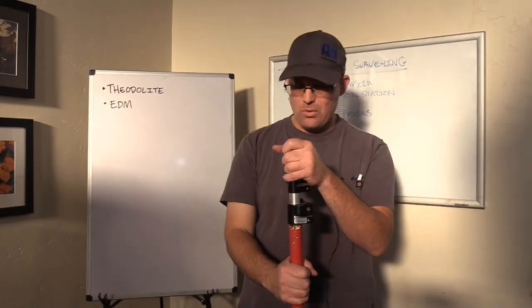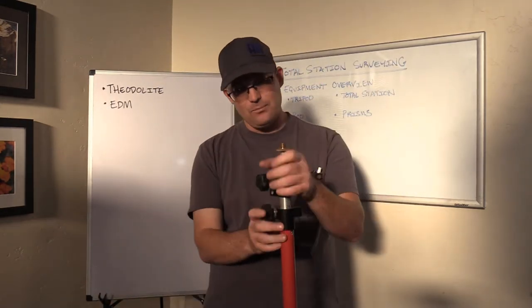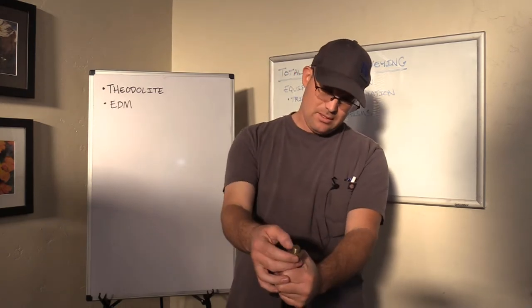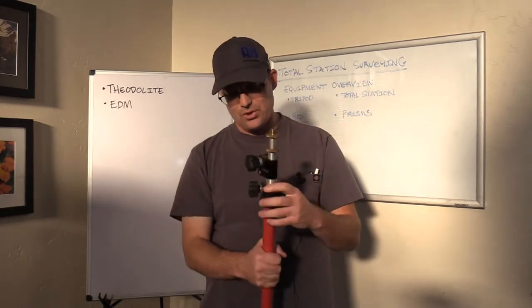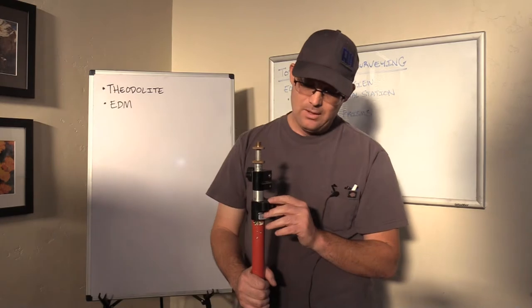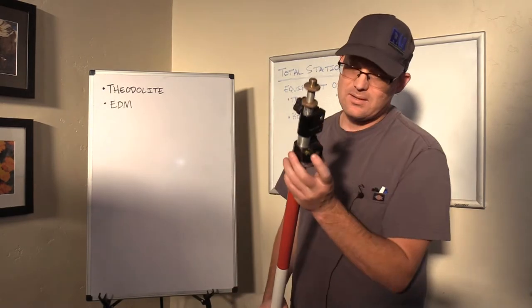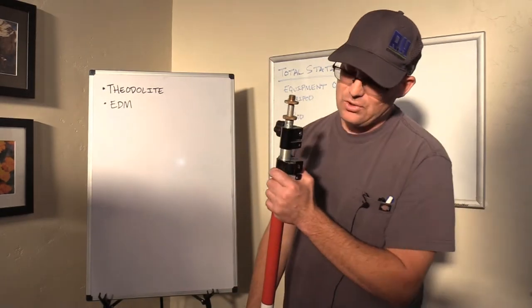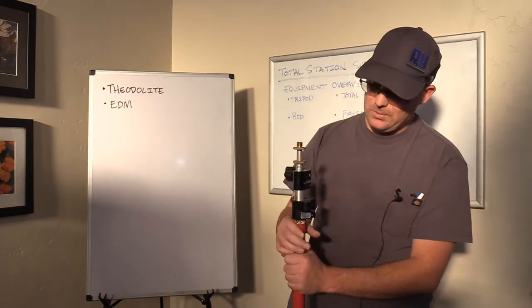That's the tip of the rod. Up here at the top, we have the thread that the actual prism goes on, which I'll show you in a moment. Then we have the level bubble. There's usually at least one level bubble, sometimes there's two.